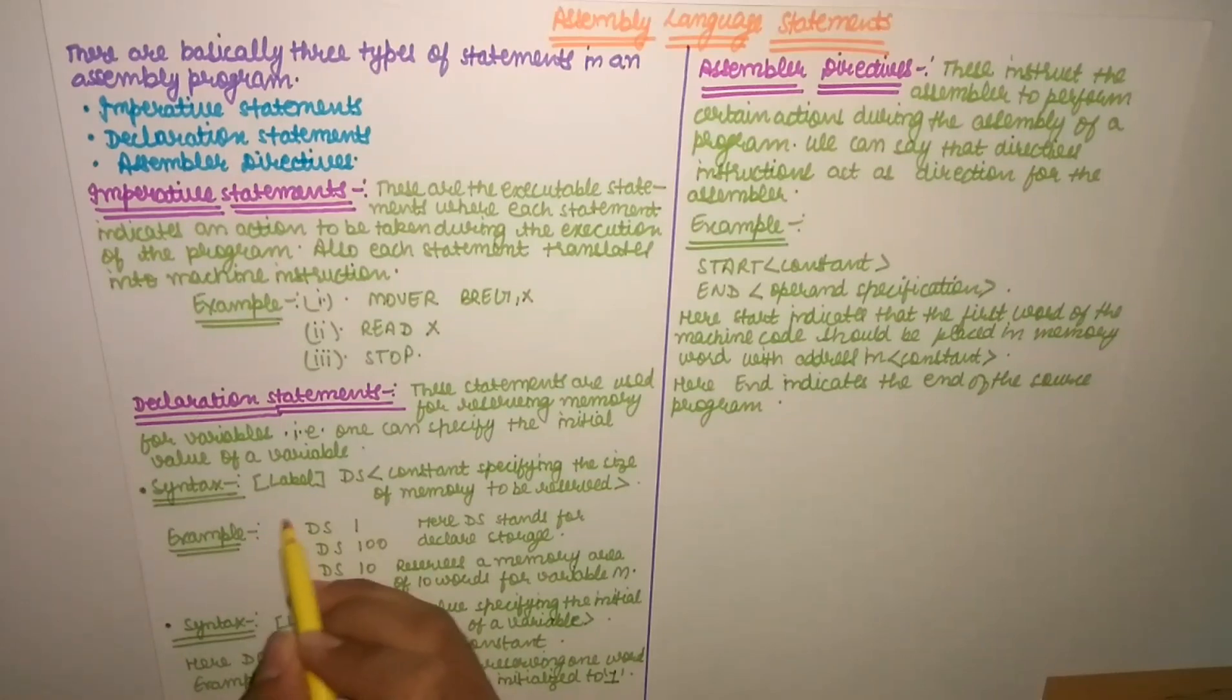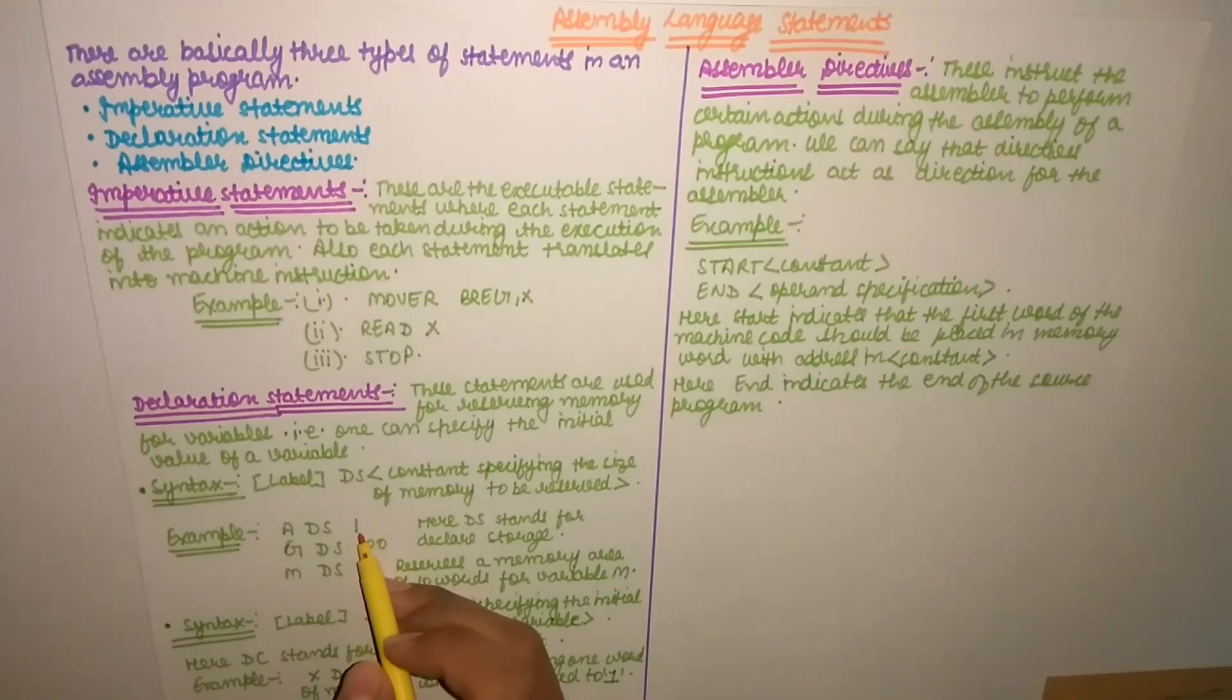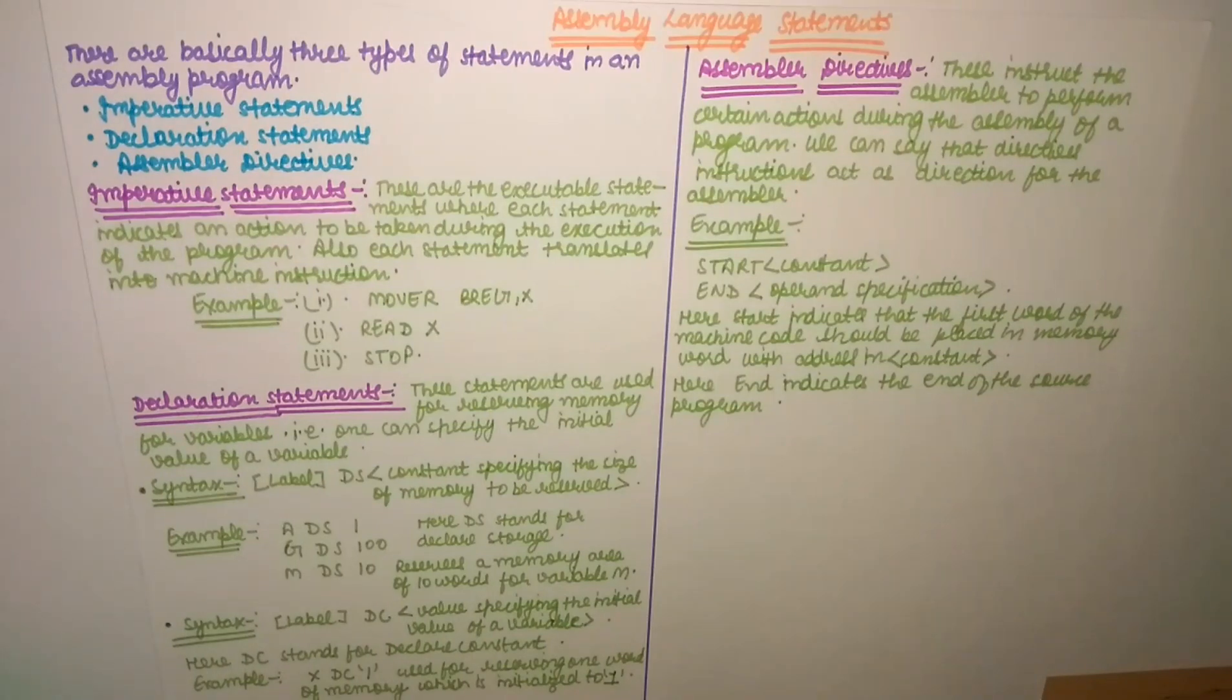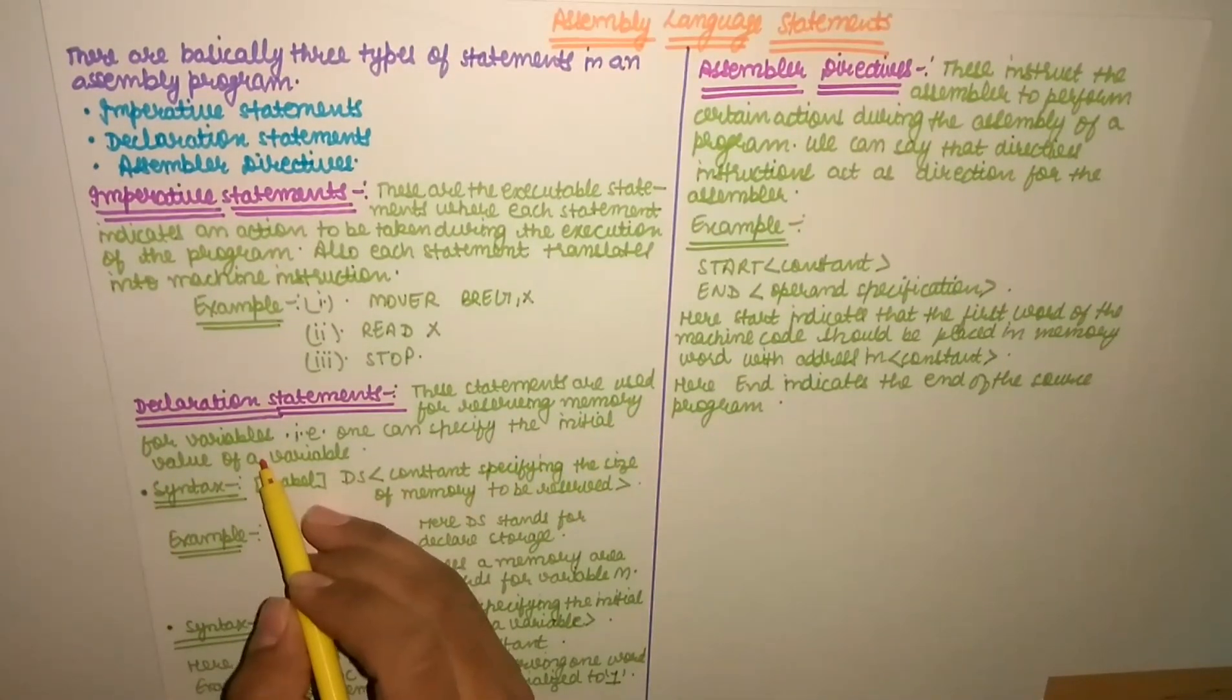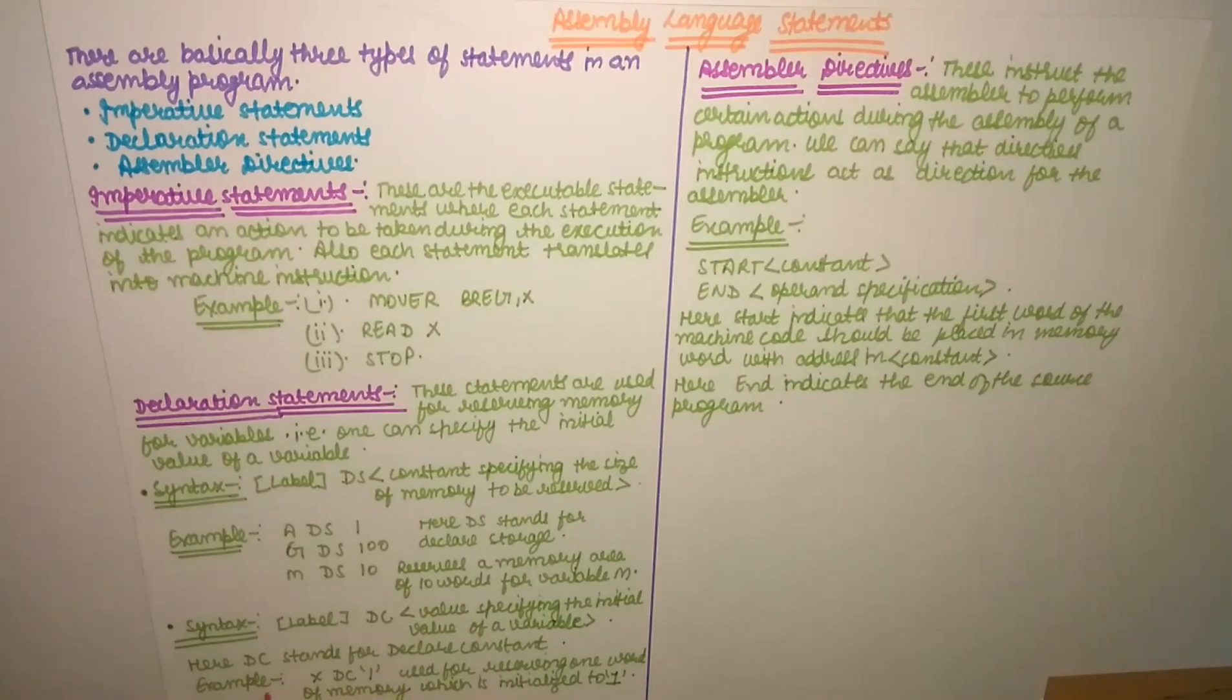M DS 10 means it reserves a memory area of 10 words for variable M. It has reserved 10 words of memory area for variable M. This is the label, M is the variable name, then DS declare storage, and how much memory area we need to reserve. So DS is used to reserve memory. Next is DC. Label, DC, value specifying the initial value of a variable. These statements are used for reserving the memory for variables using DS, and one can specify the initial value of a variable using DC. Example: X DC, DC means declare constant one. This means it's used for reserving one word of memory which is initialized to one. This reserves one word of memory which is initialized to the value one. So these are the declaration statements.